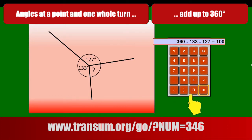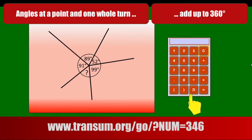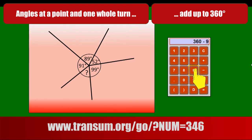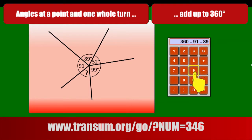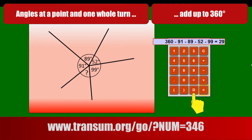Let's have a look at another example — far more angles now. We'll use our method by starting with 360 and then taking away the angles that we've got, working clockwise around the circle. That gives us 99 and 99 equals, so the angle marked with a question mark is 29 degrees.